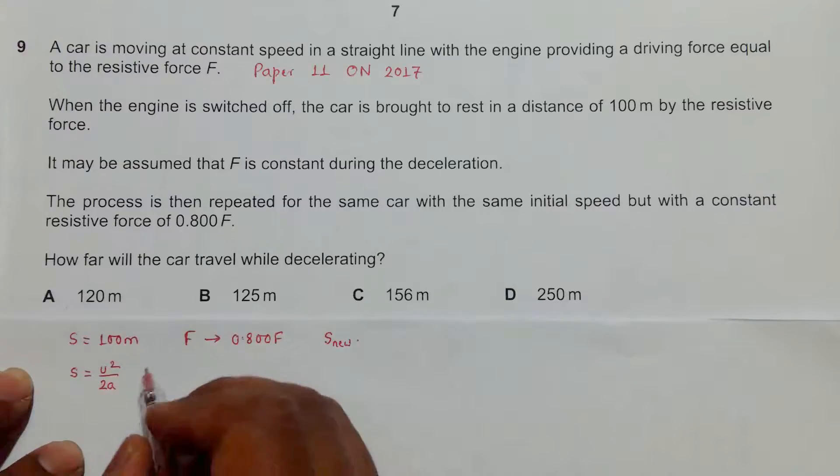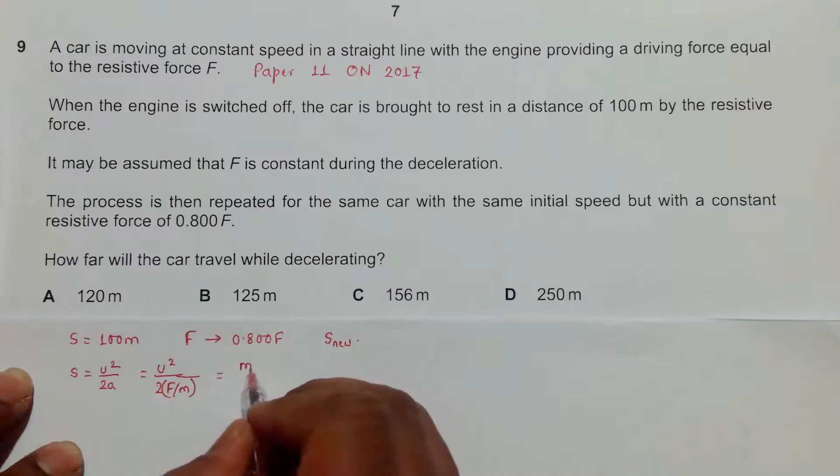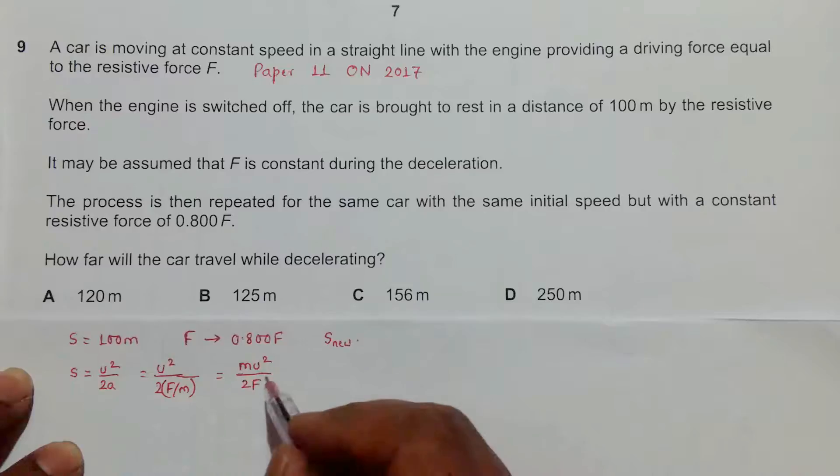So here we will have u squared. The acceleration should be equal to F by mass, so this will be m u squared by twice F. This is the initial condition.